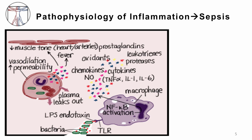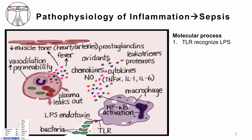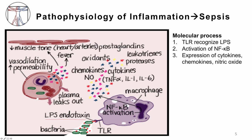What is the pathophysiology? The underlying molecular processes begin when the toll-like receptor is stimulated and identifies bacteria. One common toxin, lipopolysaccharide endotoxin, is recognized by the toll-like receptor on macrophages. Once the toll-like receptor is activated, NF-kappa-B stimulates the macrophage to start producing cytokines, chemokines, and nitric oxide.